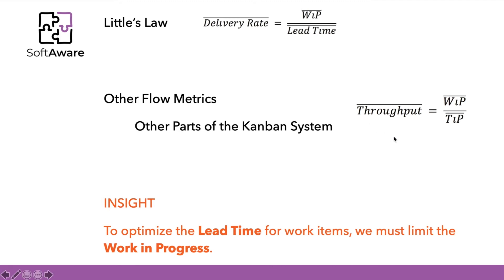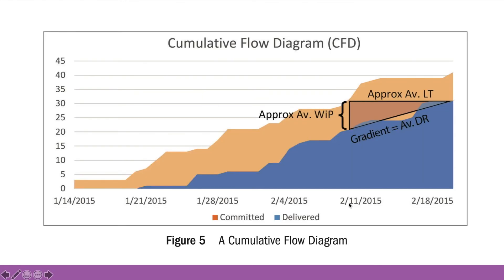By recurring to the average amount of work items in a specific stage or stages, and calculating the ratio of the average time that these work items stay in that stage or stages, we can actually compute the throughput for specific parts of the Kanban system. This leads us to the conclusion that to optimize lead time, one must ensure that the work in progress is limited, and this controls one of the variables in the equation. Figure 5 presents an example of a cumulative flow diagram where you can see those metrics visually.